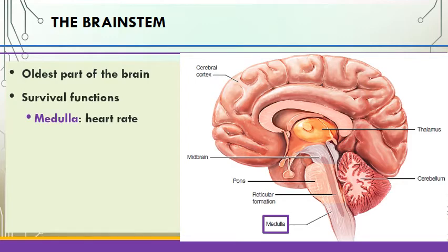They take care of basic processes incredibly important for humans to stay alive, like heart rate. The medulla oblongata regulates breathing and heart rate, which is critically important to being alive. The pons regulate sleep, and as that is an essential feature of people — we need sleep — it is located in the brain stem.